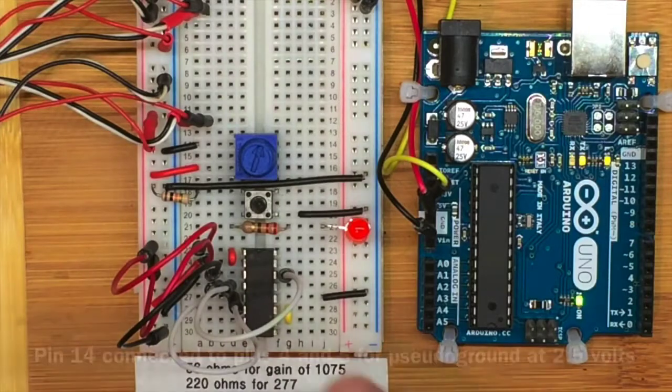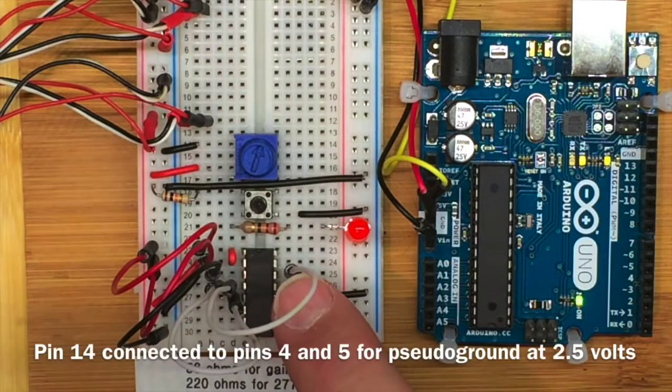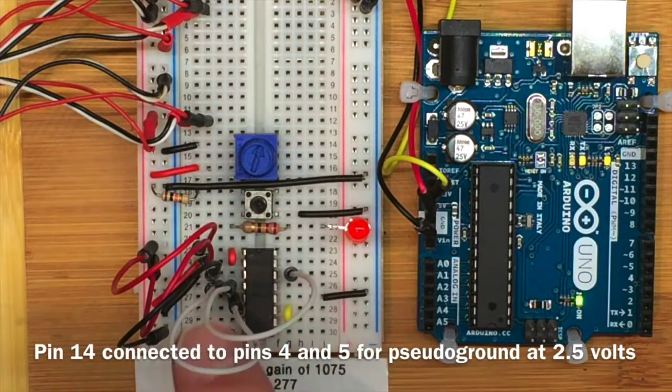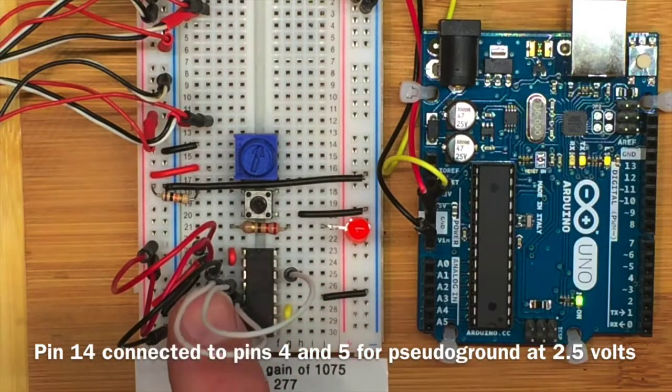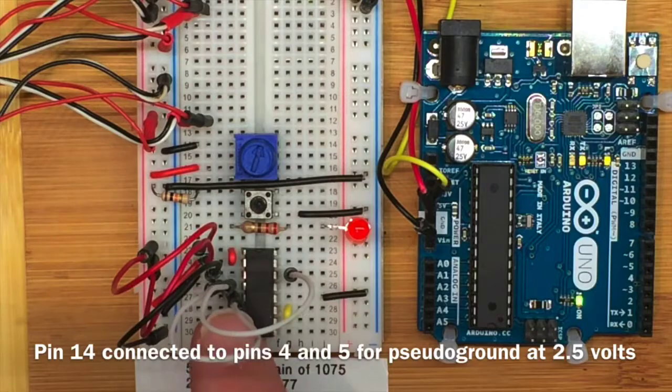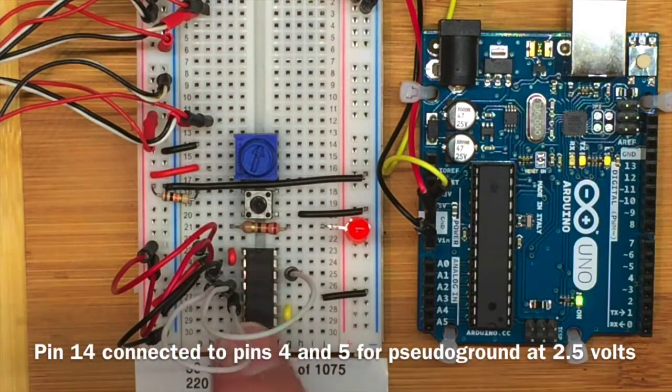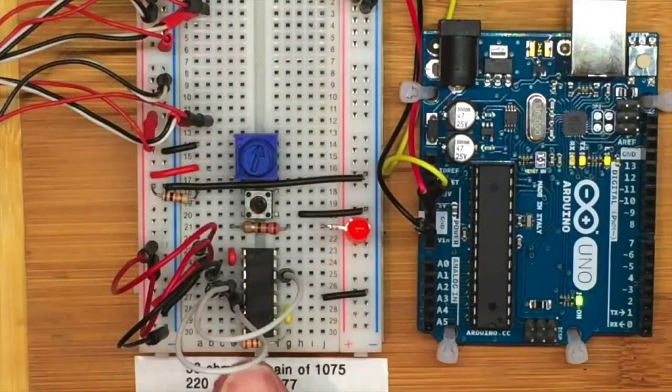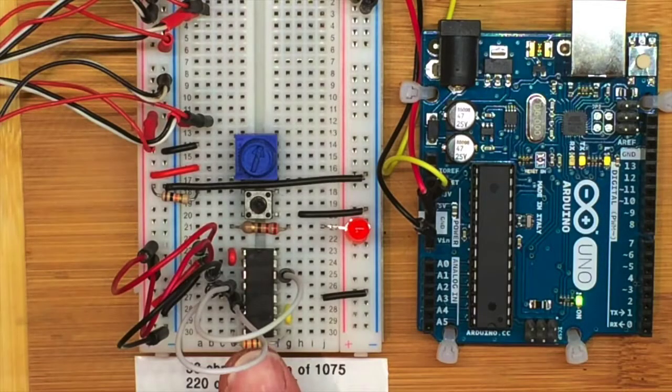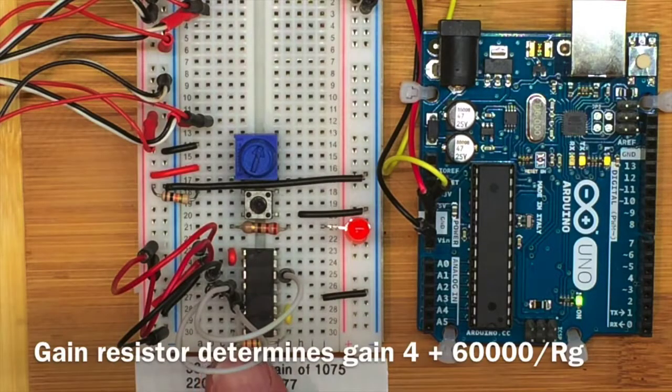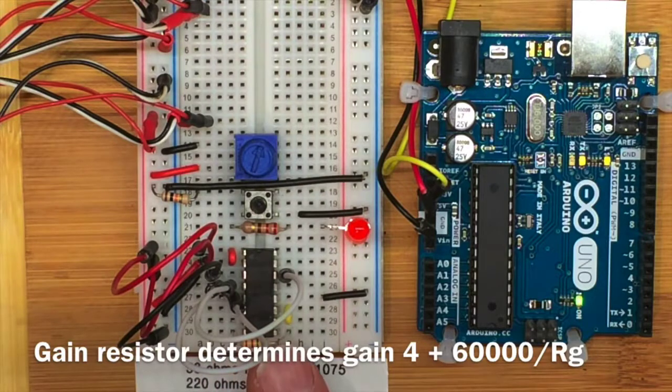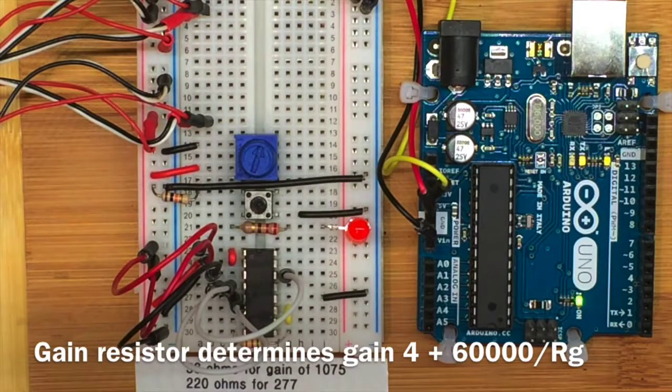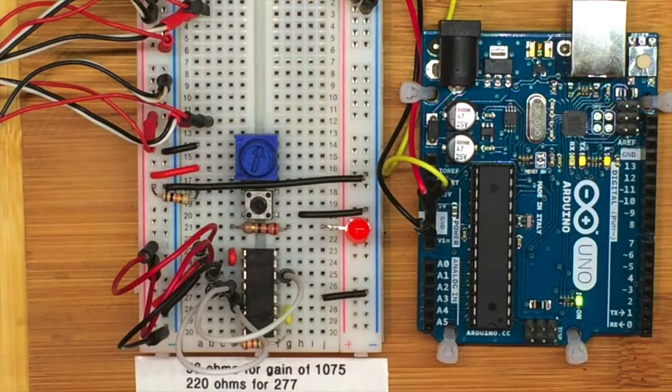The red wires are connecting pins 1 and 2 to plus 5 for the power supply and to keep the amplifier from going to sleep. For pseudo-ground operation, we get a 2.5 volt reference from pin 14. We have to connect that over through this white wire to pin 5 and to pin 4 on the other side of the amplifier. This 220 ohm gain resistor connected between pins 8 and 9 sets the gain. So for 220 ohms, that gain turns out to be a factor of 277.